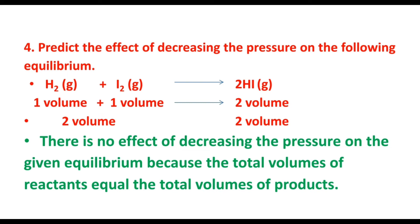Hydrogen is one volume, I2 is one volume — that gives two volumes on the left. The product 2HI is also two volumes. So the volumes are equal on both sides. There is no effect on decreasing the pressure on this equilibrium because the total volumes of reactants and products are equal.